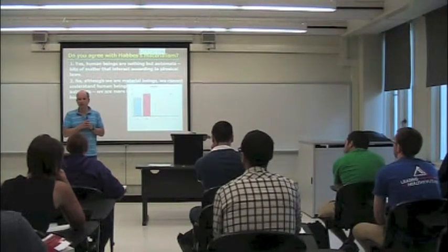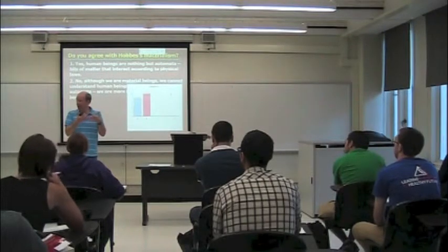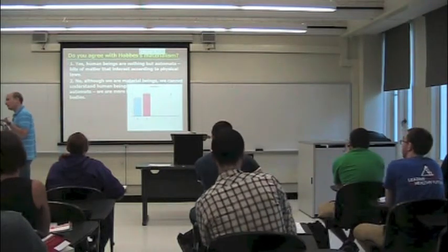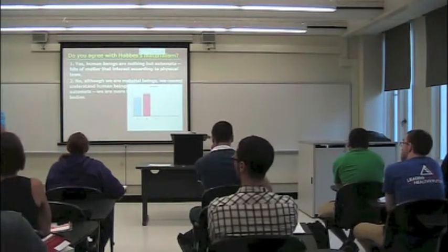So for Hobbes, there's a circuit that may be very complicated, but maybe you want to suggest it's not really a choice.